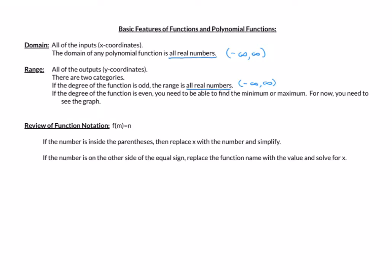Recall the degree — this is the exponent of the leading term, or the largest exponent. This is the easy one; you don't have to look at the graph in order to find it. We'll see what a graph of an odd function looks like in a few minutes. Now, if the degree of the function is even, you need to be able to find the minimum or maximum. We'll need to be able to see the graph.